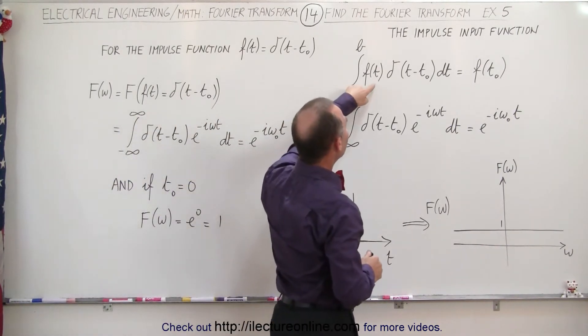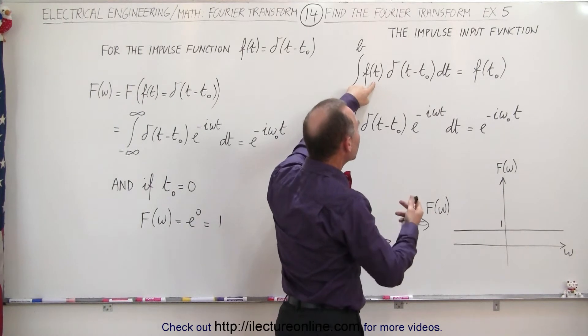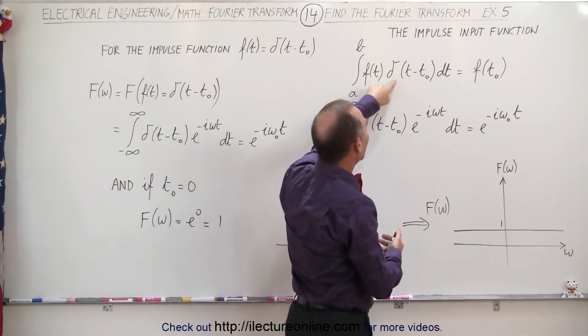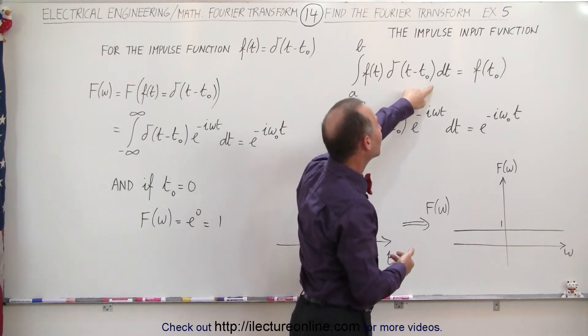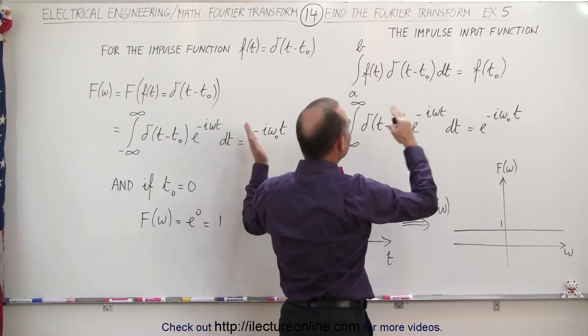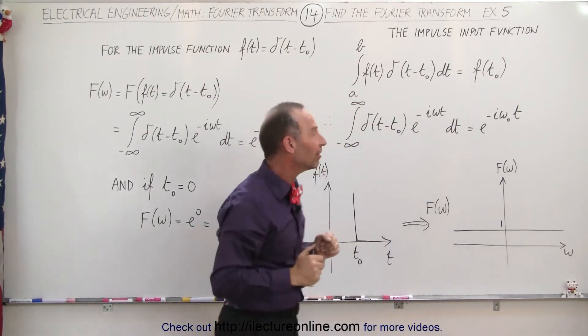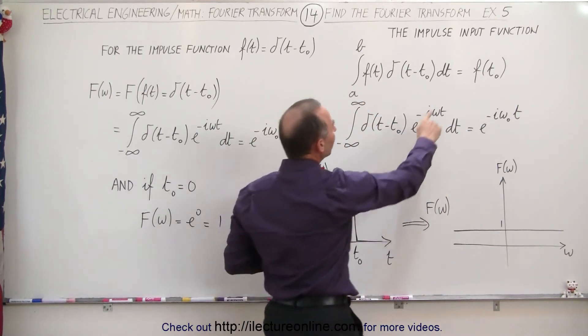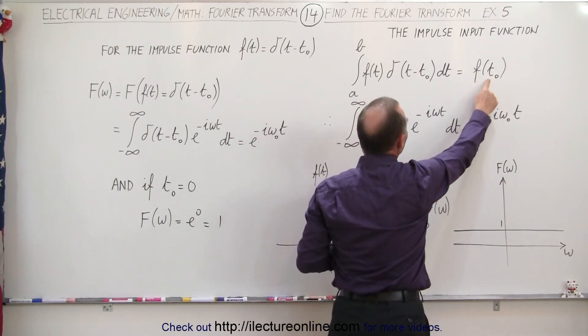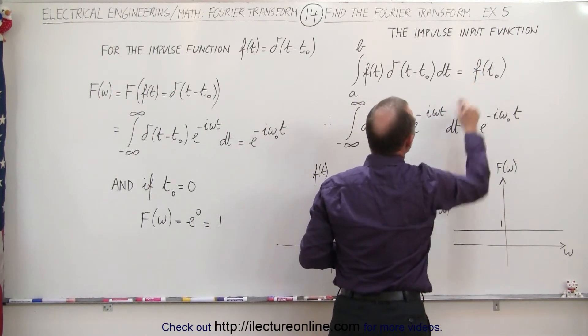So if we have an equation f of t, any equation, multiply times a delta function of t minus t sub-naught, dt, and we integrate that from a to b, ensuring that a and b are on both sides of the delta function, then the result of that integral is the function centered at t sub-naught with t equals t sub-naught.